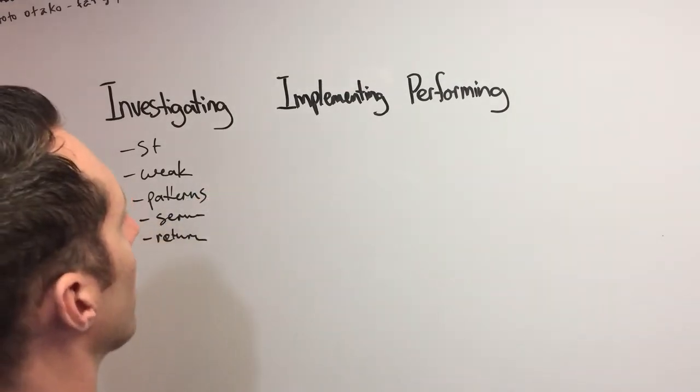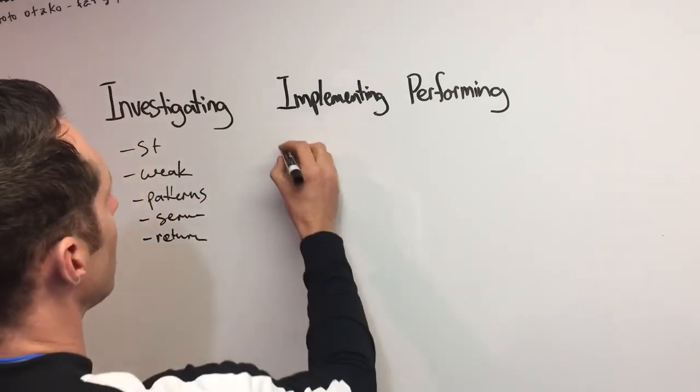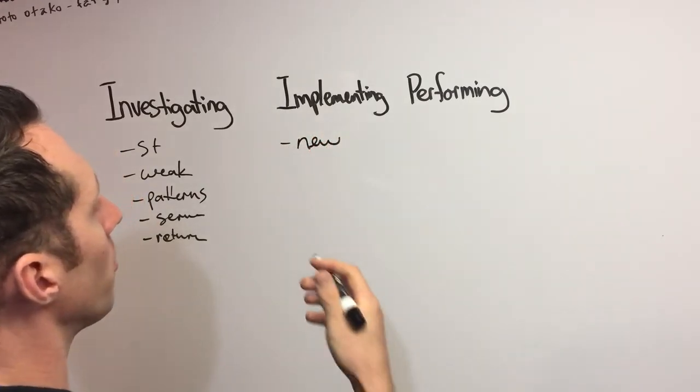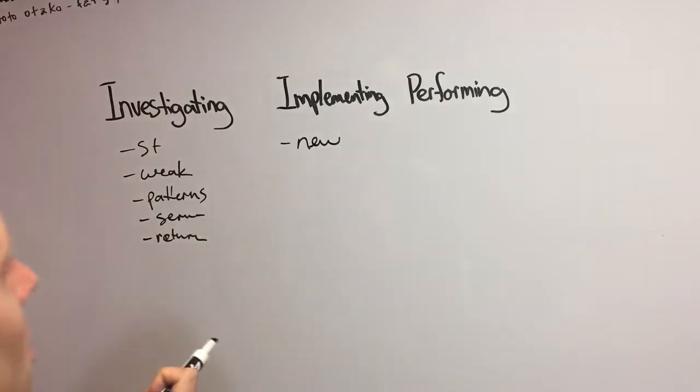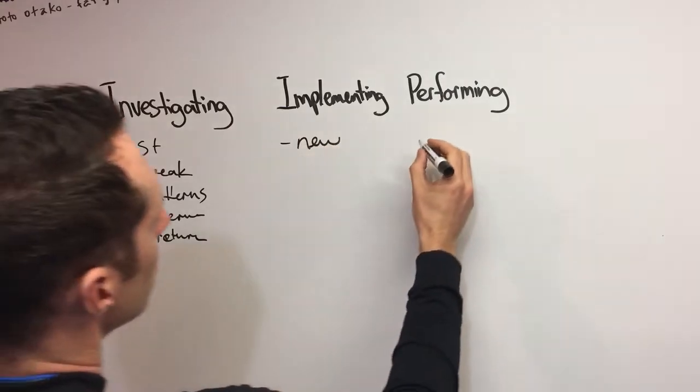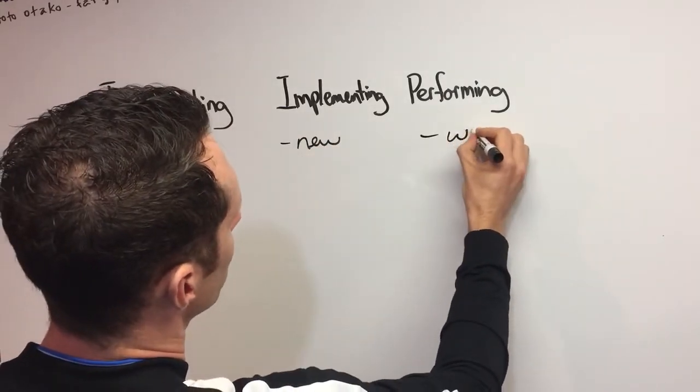Implementing and performing are actually more common. Implementing means that you're trying to implement something new. Maybe you've been working on your backhand loop for a long time, but you're not able to use it in match play. Implementing is when you're trying to implement something new, and performing is when you're trying to win.